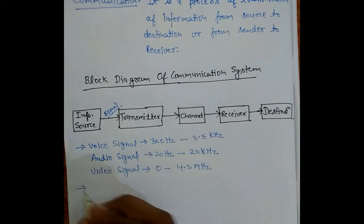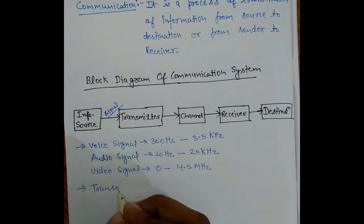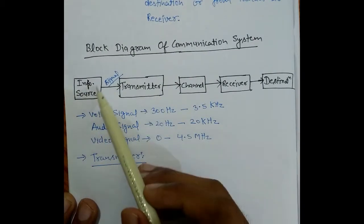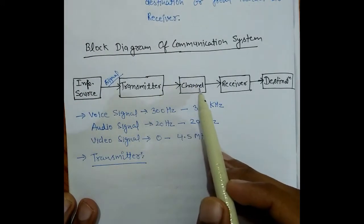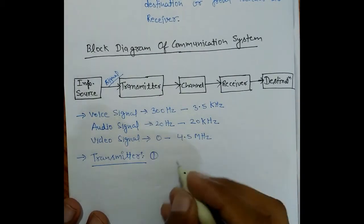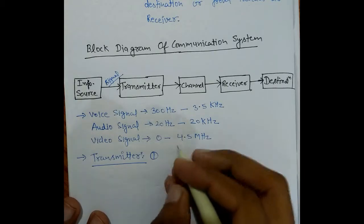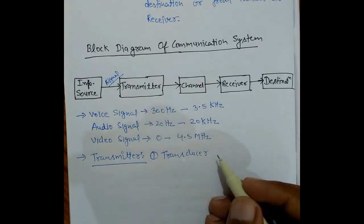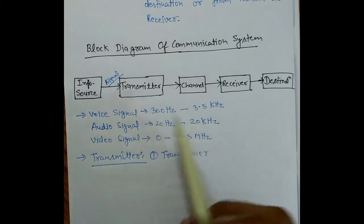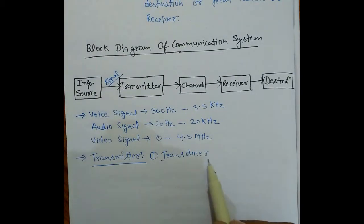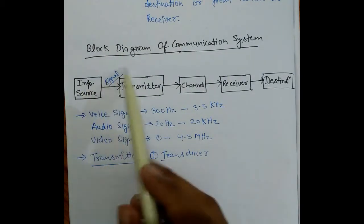The next block is the transmitter. The transmitter takes whatever signal the source generates and transmits it through the channel to the receiver. The first block inside the transmitter is the transducer. The transducer is an electrical device that converts one form of energy to another form of energy — here, it converts the message signal to an electrical signal.